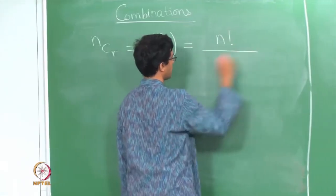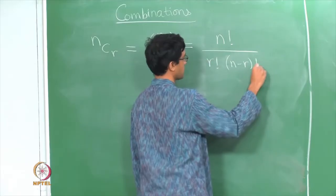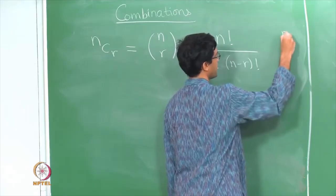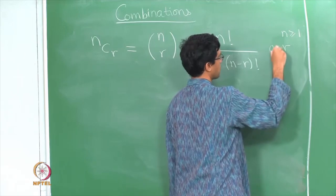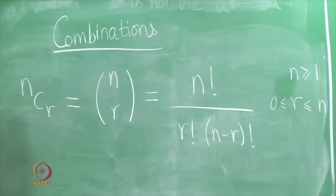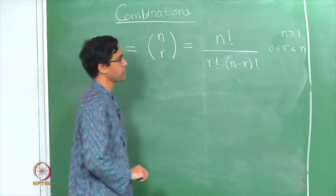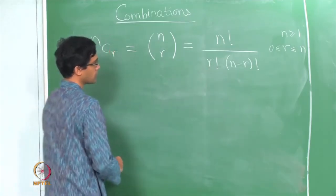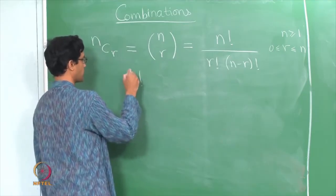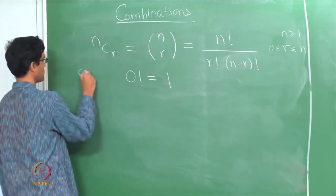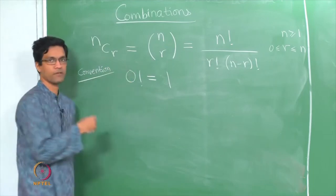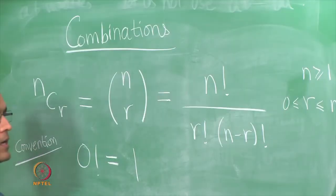N choose R is N factorial divided by the product of these two factorials, and this formula holds for N at least 1, and R a number between 0 and N. If you choose R equal to 0, then R factorial — that is 0 factorial — will appear. The convention for 0 factorial is that it is 1. This had in fact occurred earlier when we talked about Taylor polynomials. So 0 factorial is 1.